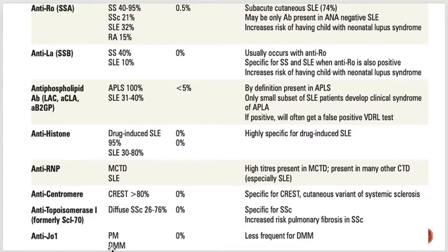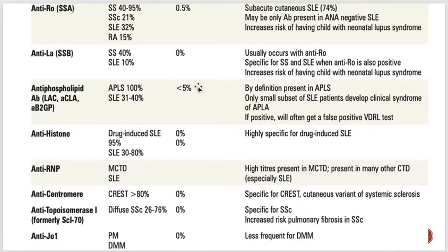Anti-Jo-1 antibodies are associated with polymyositis and dermatomyositis. These rheumatological conditions cause myositis, and exam questions usually present them with photographs showing knuckle rashes and a heliotrope rash. These antibodies are present in those conditions. The percentages shown indicate how many healthy patients carry these antibodies — for example, anti-Ro is present in 0.5% of healthy people, and antiphospholipid in less than 5% of healthy people, but without causing disease.